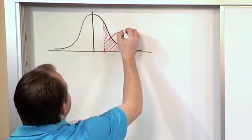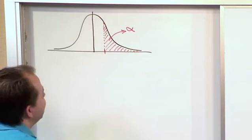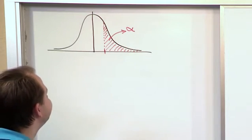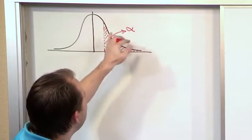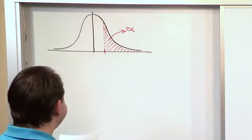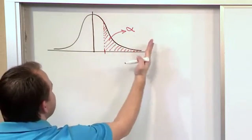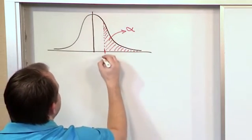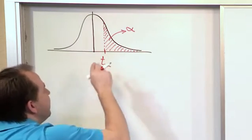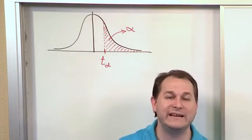This area to the right is called alpha. You need to get it in your head that this area here is denoted alpha. The corresponding line up to which the area is measured is called T-sub-alpha. The reason it's called T-sub-alpha is because this is a T-distribution.